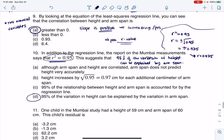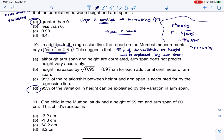And then the last one asks us to take a look at residuals. It says one child in the Mumbai study had a height of 59 and an arm span of 60 centimeters. So this child's ordered pair, we knew the arm span was 60, and they gave us a height back of 59. This was the actual data value.